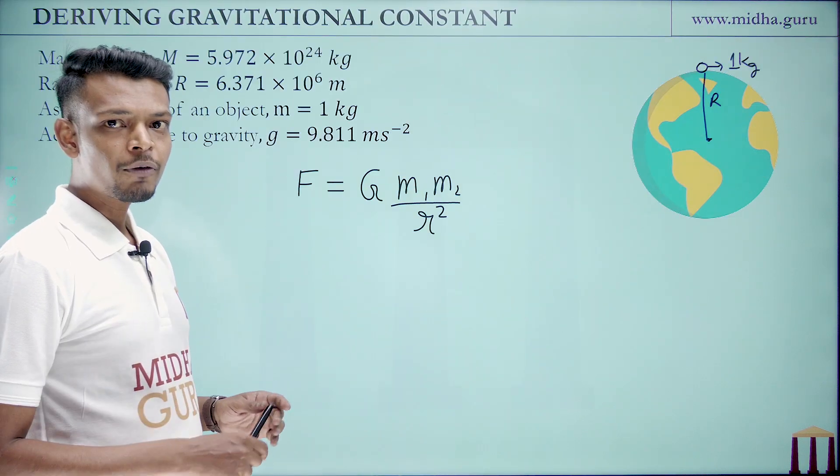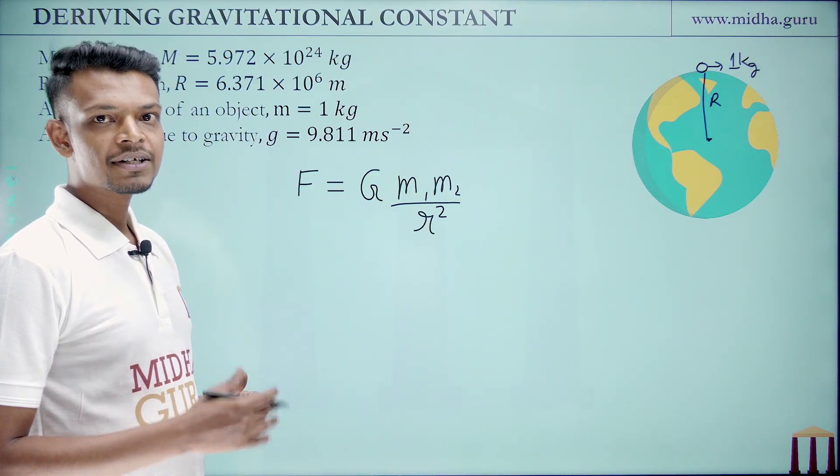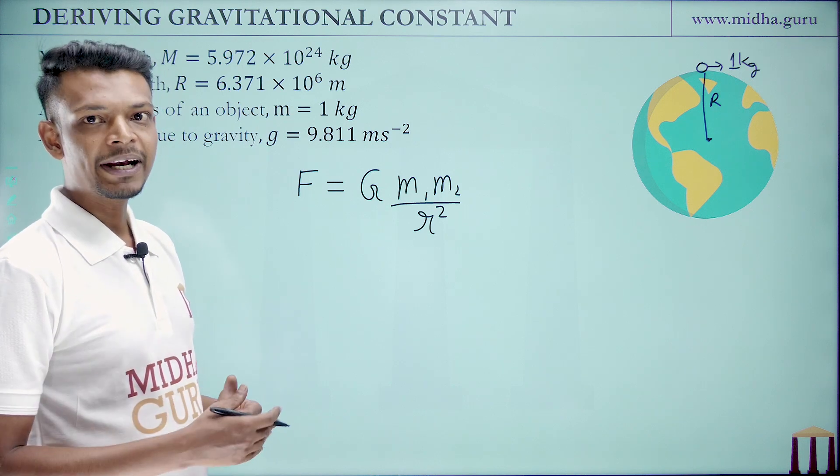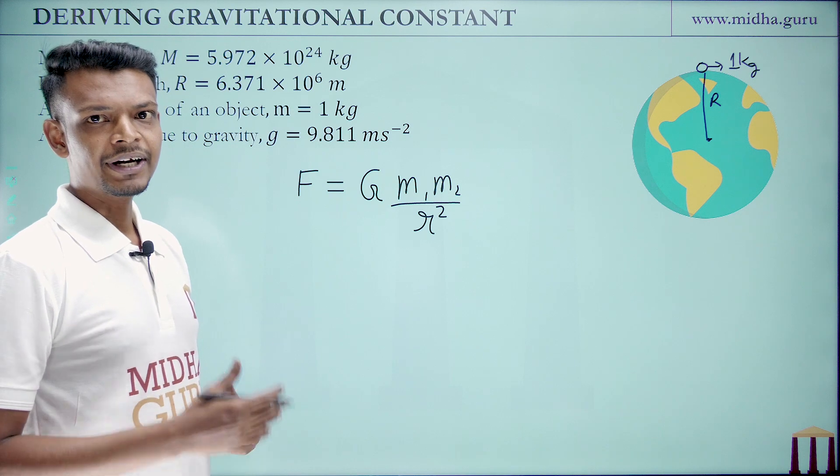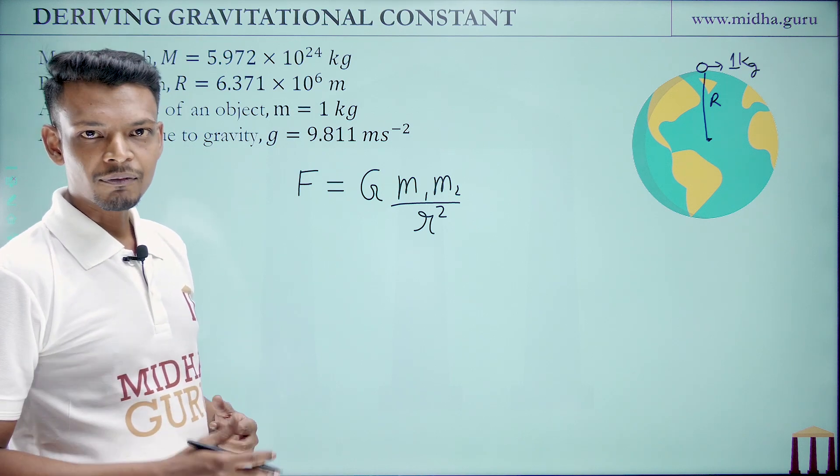Now we know one more way to calculate the force exerted on an object. This is the weight of the object. Weight is nothing but the gravitational force exerted on any object on the surface of the Earth.